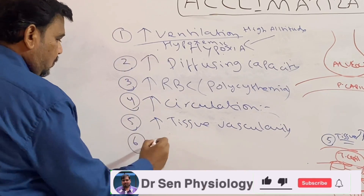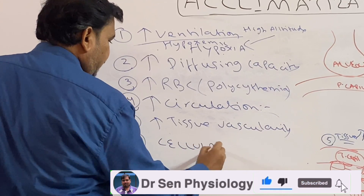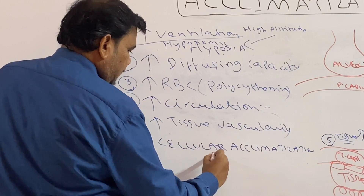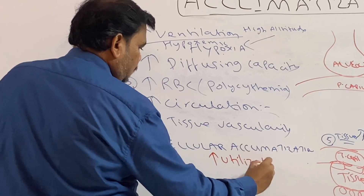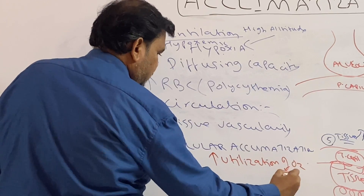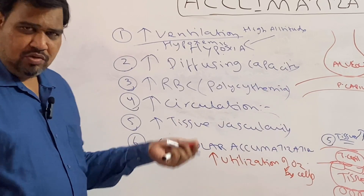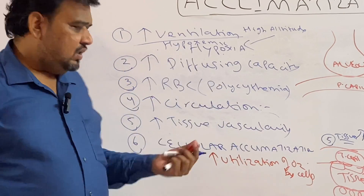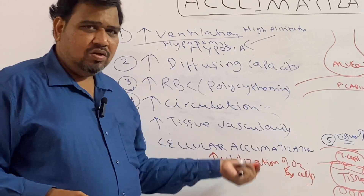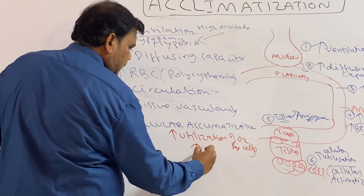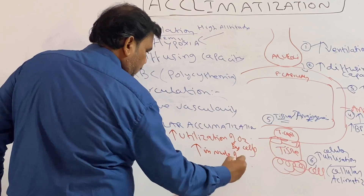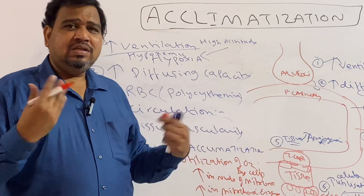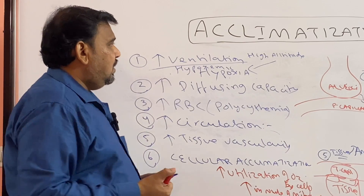Coming to the final point — cellular level, which we call cellular acclimatization. What happens in cellular acclimatization: there is increased utilization of oxygen by cells, in spite of less oxygen available due to hypoxia. Whatever oxygen is available, almost all of it is utilized. The reason is an increase in number of mitochondria and increased mitochondrial enzymes, all of which cause increased utilization of oxygen.